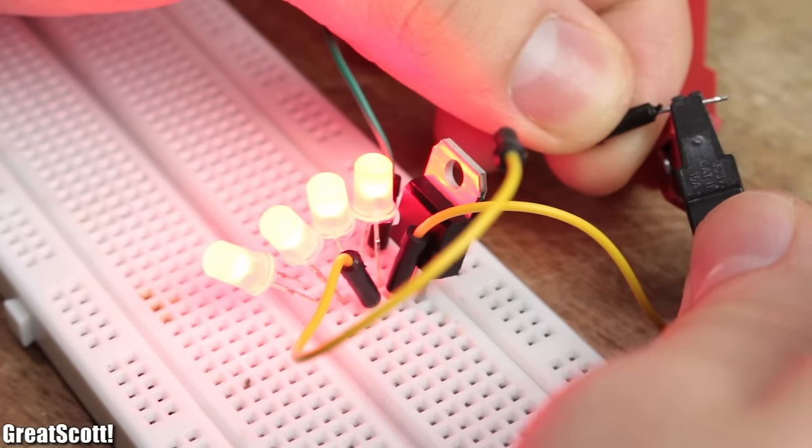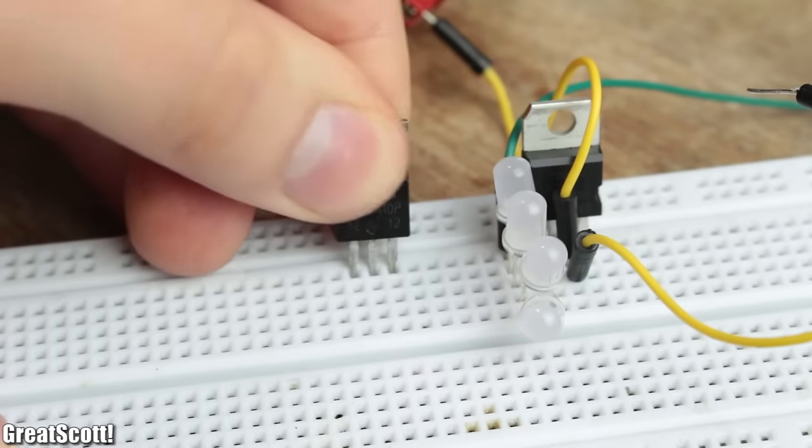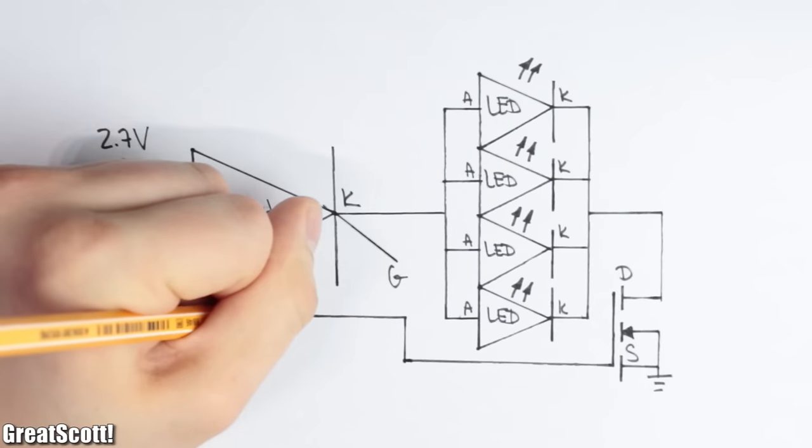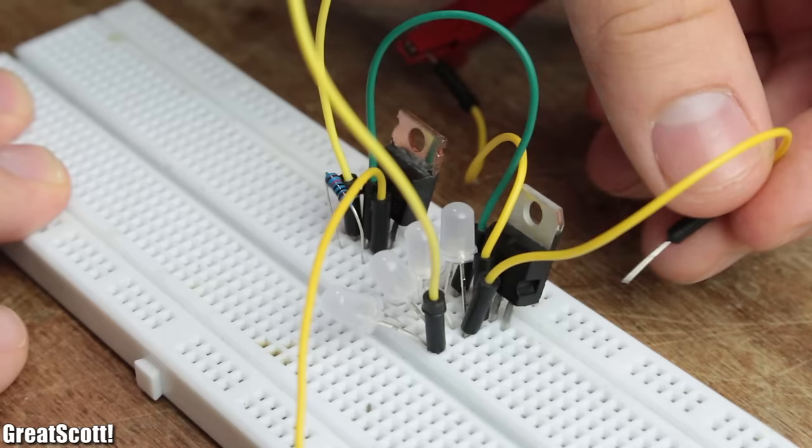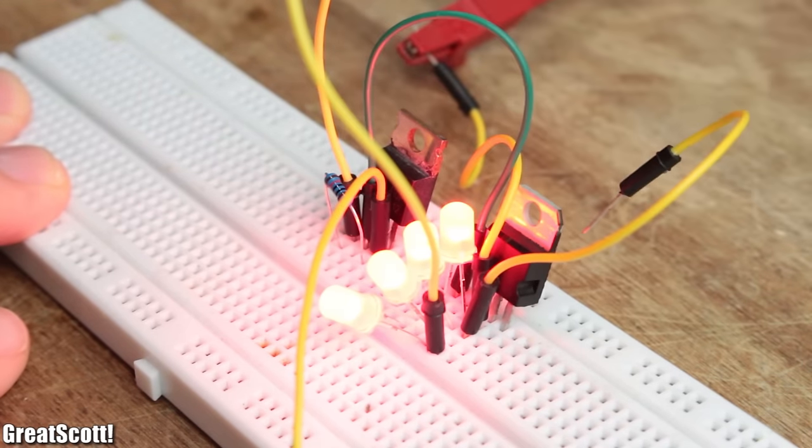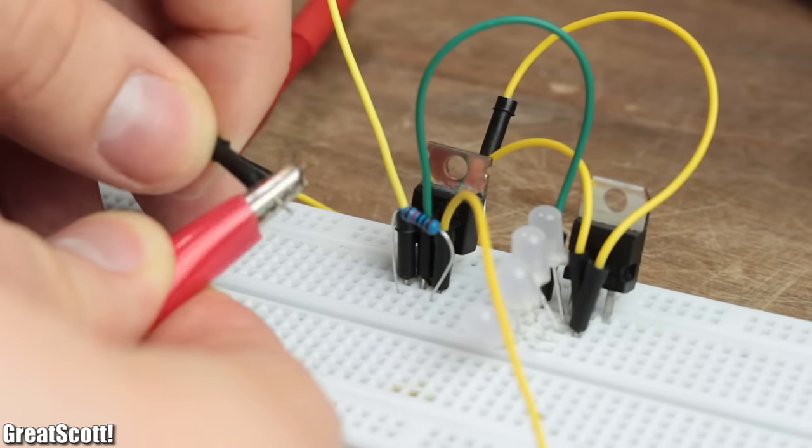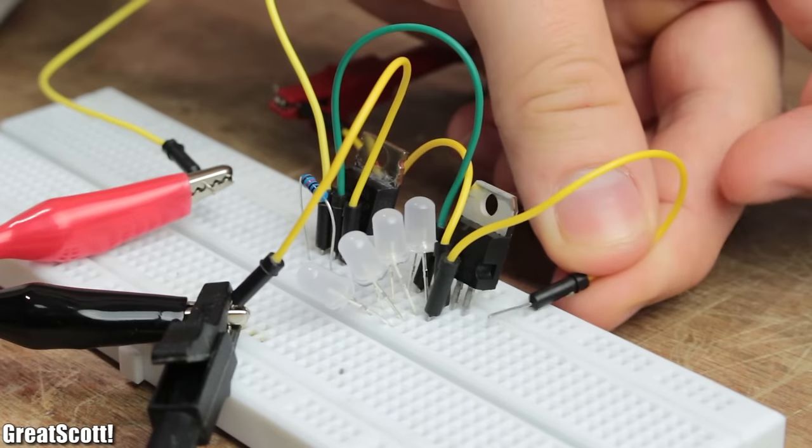So the only way to turn off the thyristor is by interrupting the current flow with for example a MOSFET. This composition does not make much sense since we could use the MOSFET as a switch itself. But if we apply a fast-changing square wave signal to the gate of the MOSFET we can see another important characteristic of a thyristor.